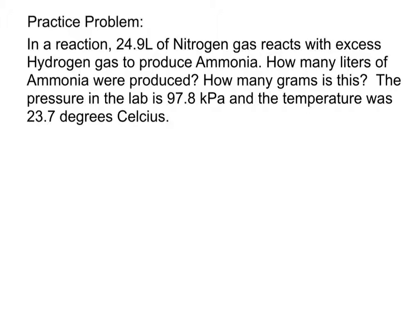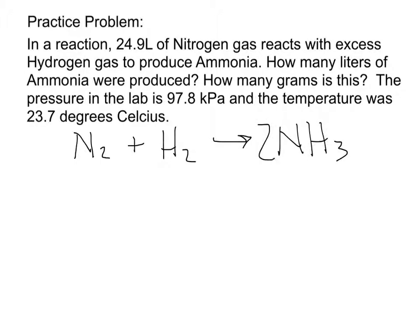Here's a practice problem. In a reaction, 24.9 liters of nitrogen gas reacts with excess hydrogen gas to produce ammonia. How many liters of ammonia were produced? How many grams is this? The pressure in the lab is 97.8 kilopascals, and the temperature was 23.7 degrees Celsius. So step one, create a balanced chemical equation. We have nitrogen gas and hydrogen gas, and we're going to create ammonia. Now we balance our chemical equation and start to solve our problem.